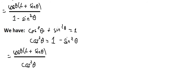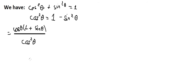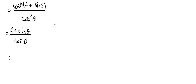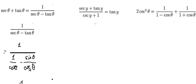Now we simplify cosine theta with cosine theta. We get one divided by cosine theta, which equals one over cosine theta. And this is the final answer for question number one.